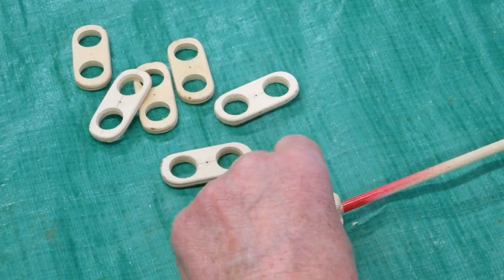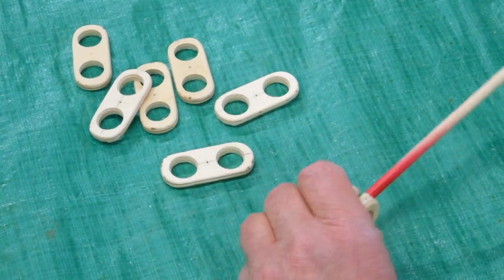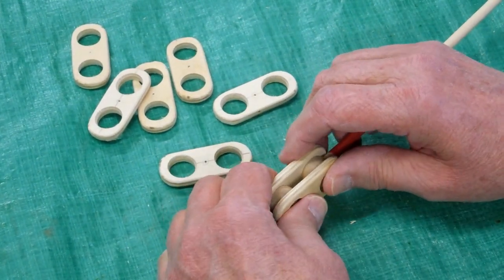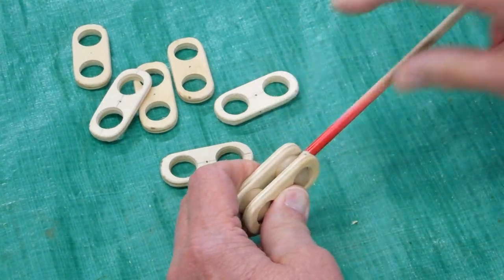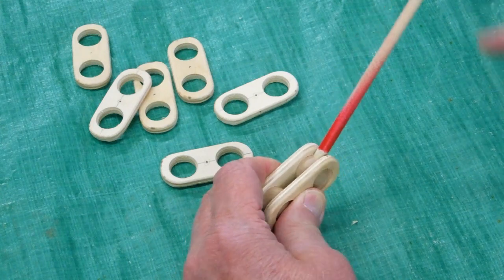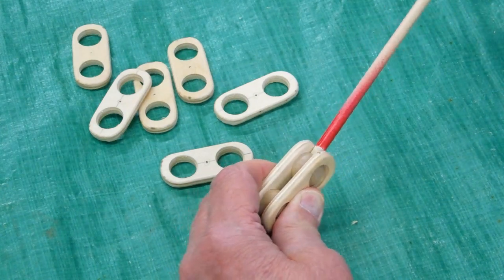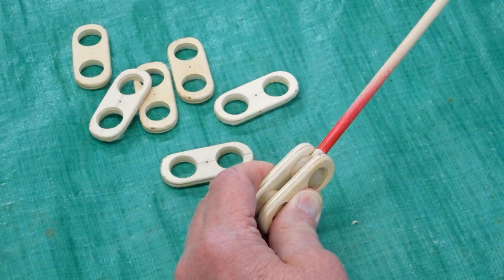Now two of these will go together. There'll be a bolt that goes through here with a washer on either side and you tighten that until you have just enough drag so that will stay in whatever position you put it in.